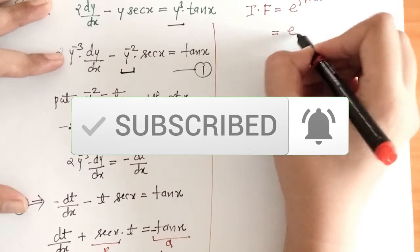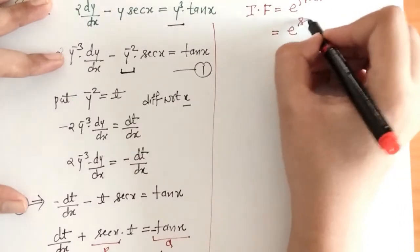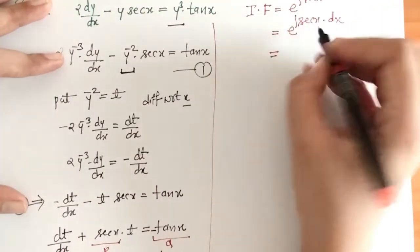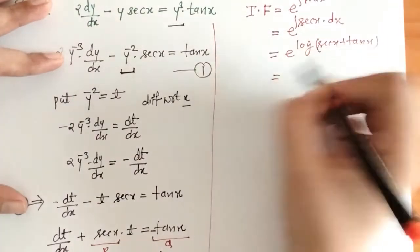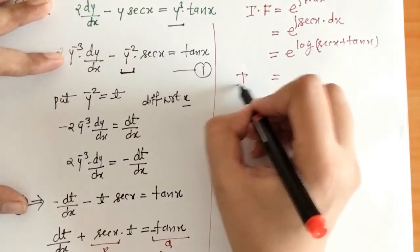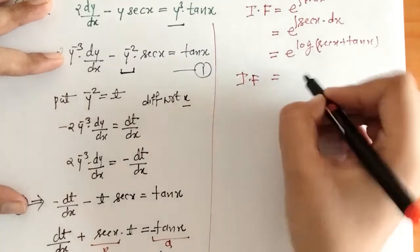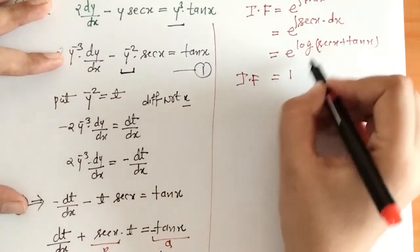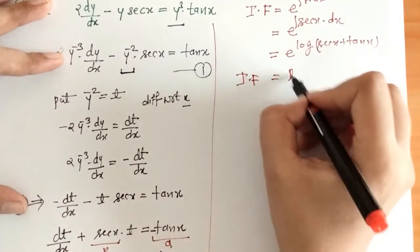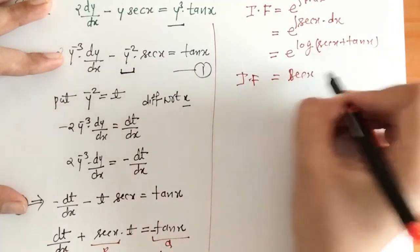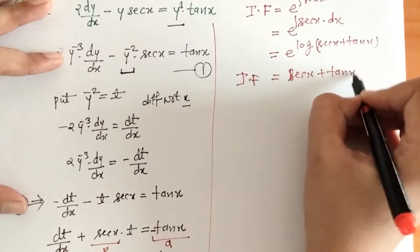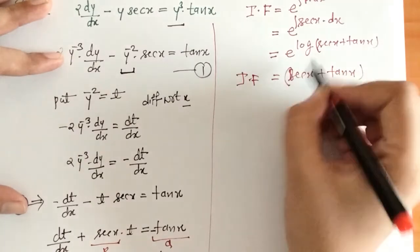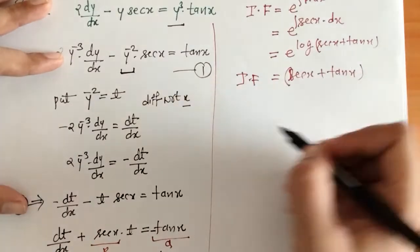Now we will find the integrating factor. We identify the values of P and Q. The integrating factor is e raised to the integral of P with respect to x. Here P is sec x. So we compute the integral of sec x, and we get the integrating factor as sec x plus tan x, since e and the log cancel.